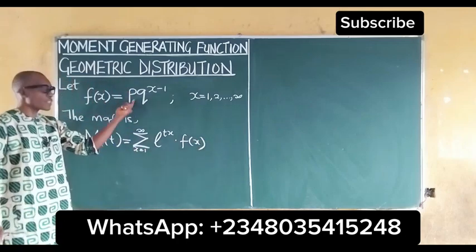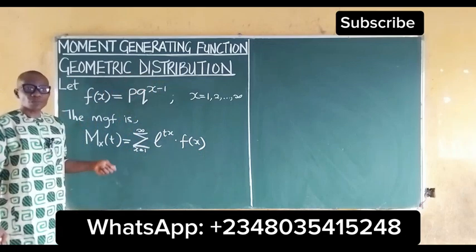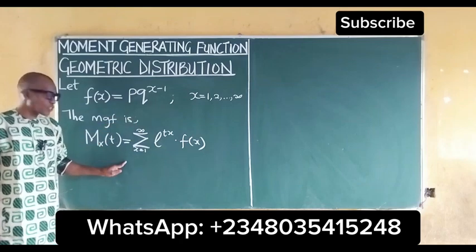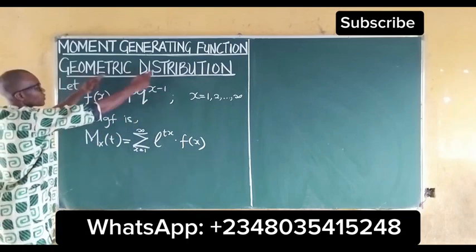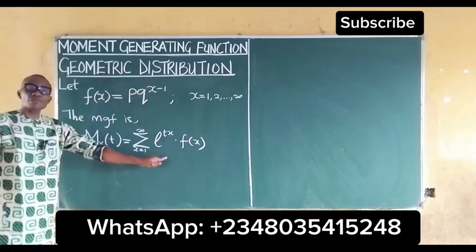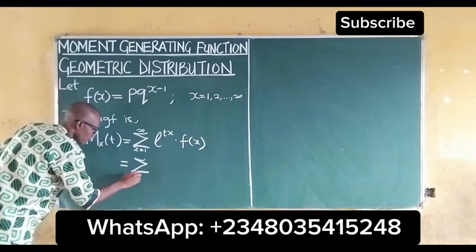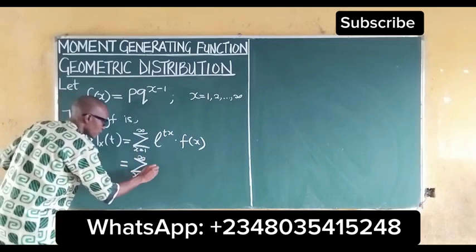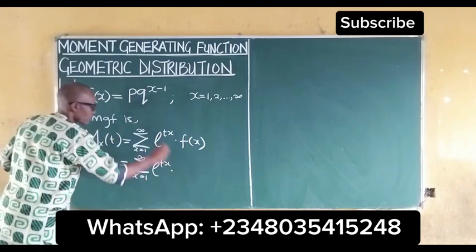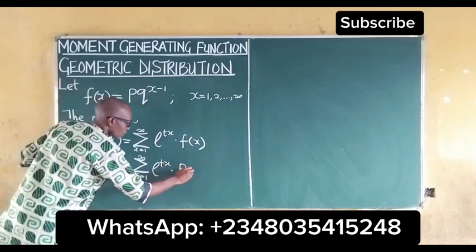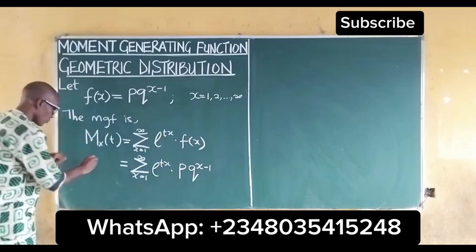This f(x) is the PDF of the geometric distribution. The next thing to do is to substitute the PDF into the moment generating function. Substituting the PDF of the geometric distribution gives us the summation, with x ranging from 1 to infinity, of e^(tx) multiplied by the PDF p·q^(x−1).